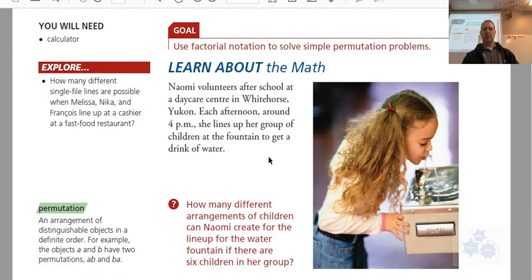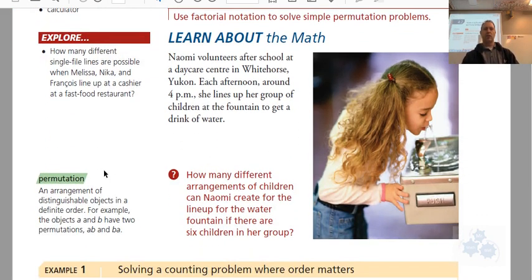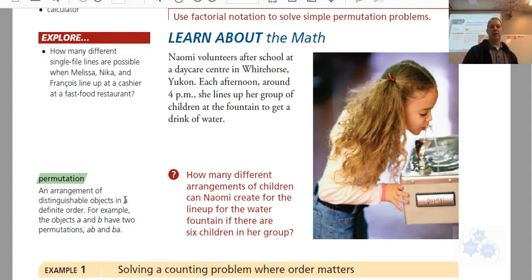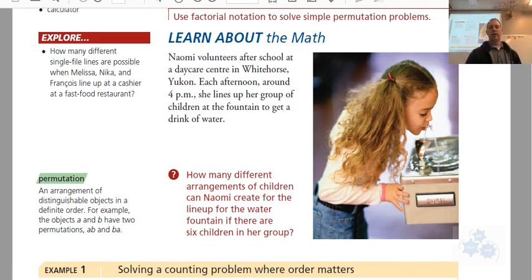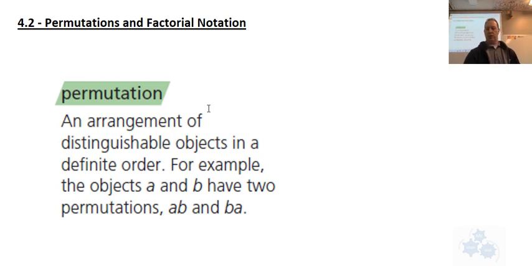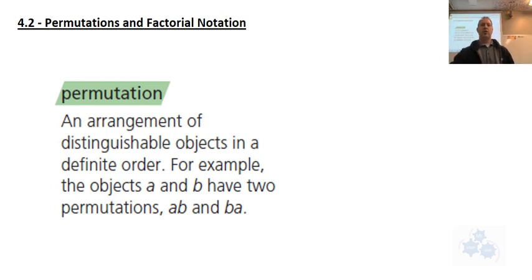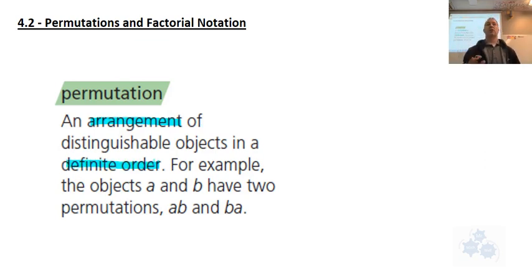You have the definition right here: a permutation is an arrangement of distinguishable objects in a definite order. So in your notebook, let's jot down a definition. The first important thing is when you see the word 'arrangement' — it means definite order. How do you arrange things? This is first, this is second, this is third.